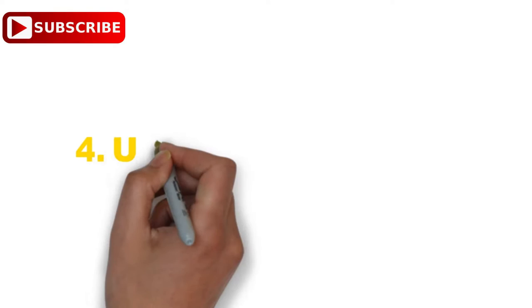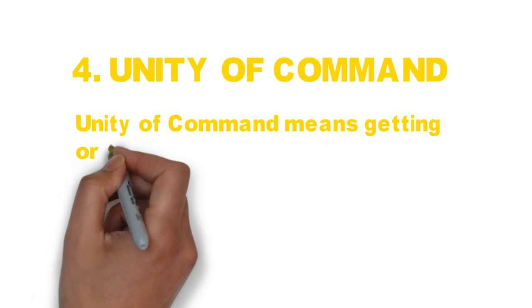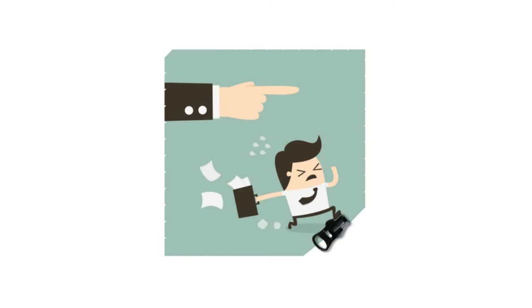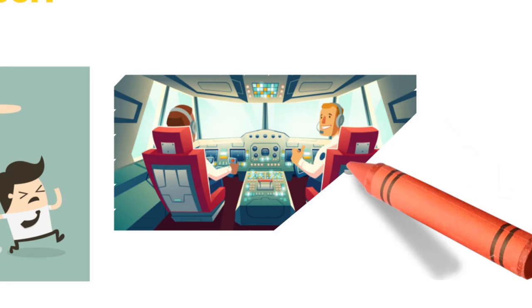Principle number four: Unity of Command. Unity of command means getting orders or commands from only one superior. This principle states that an individual must receive orders from a single superior so that the employee can understand what to do and execute systematically. If more than one boss instructs an individual, the employee will surely be confused about their responsibility and will not be able to perform. For example, at the time of flying a plane, the pilot should get instructions from the commander only, not from the co-pilot.